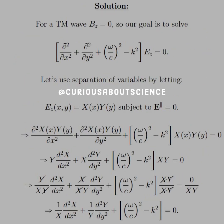Let's run it back. For a TM wave, B_z equals zero, so our goal is to solve the coupled equation. Partial squared over partial x squared plus partial squared over partial y squared plus (omega over c) squared minus k squared times E_z equals zero. Let's use separation of variables by letting E_z as a function of x and y equal X(x)Y(y) respectively, subject to the parallel components equals zero. That's our boundary condition.